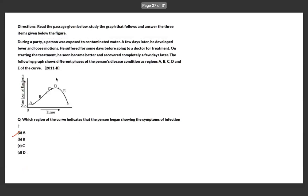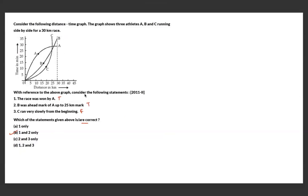A scenario describes a person exposed to contaminated water at a party who developed fever and loose motion. A graph shows the person's disease condition across regions A, B, C, D, and E. The question asks which region indicates the person began showing symptoms. Since symptoms begin at the initial stage just above zero, region A is the answer.